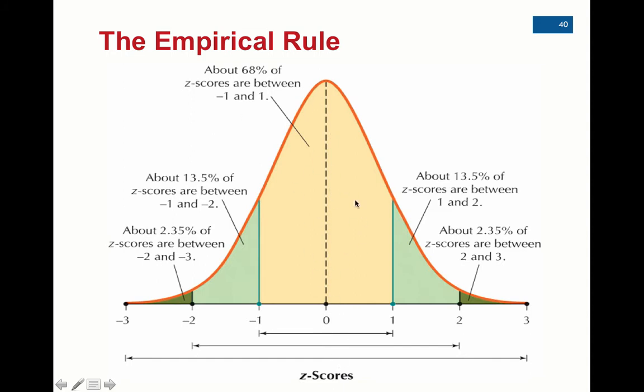68% of the data in this orangish-tangish region are within one standard deviation of the mean. By within one standard deviation, we mean one standard deviation below to one standard deviation above. Most of the data, 68% is well over half of the data, lies within one standard deviation.